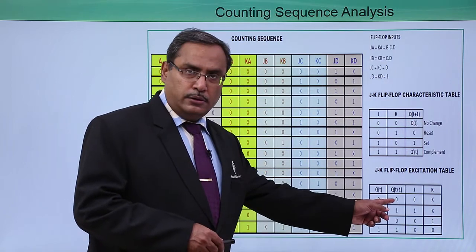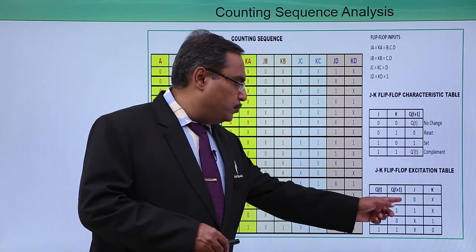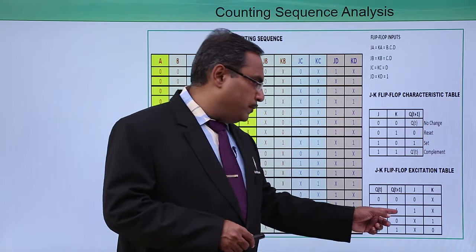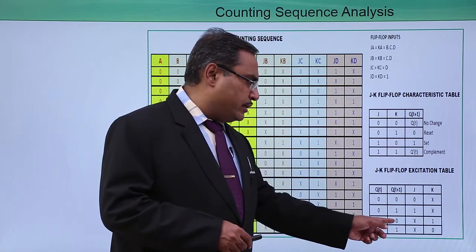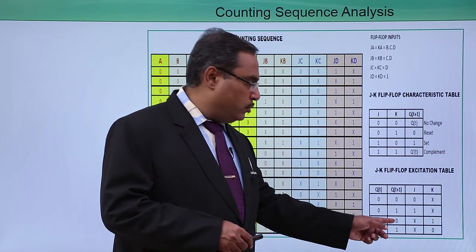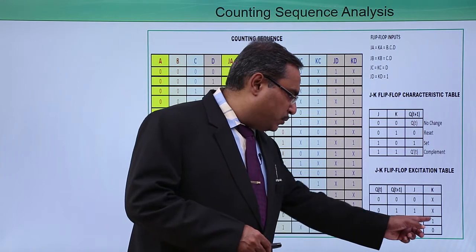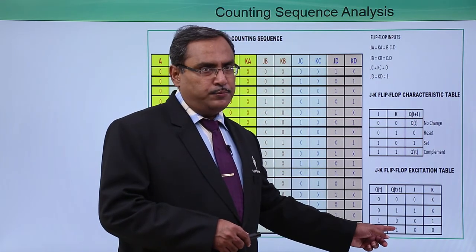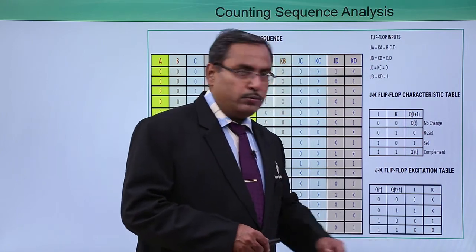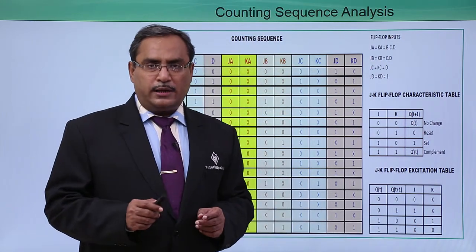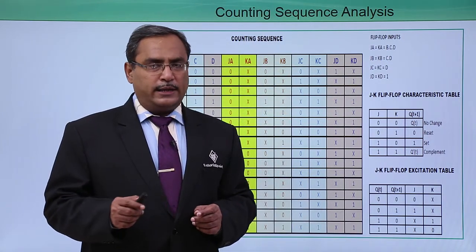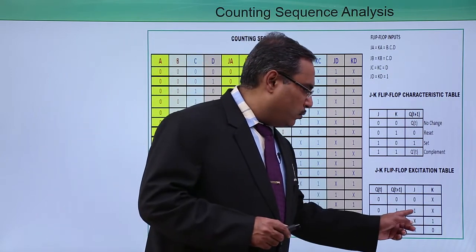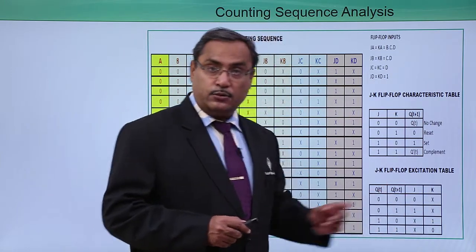From the JK excitation table: a 0-to-0 transition requires input 0x; a 0-to-1 transition requires input 1x; a 1-to-0 transition requires input x1; and a 1-to-1 transition requires input x0. So the four cases are: 0x, 1x, x1, x0.